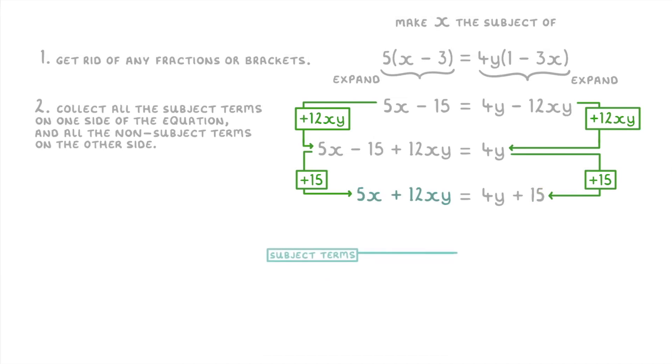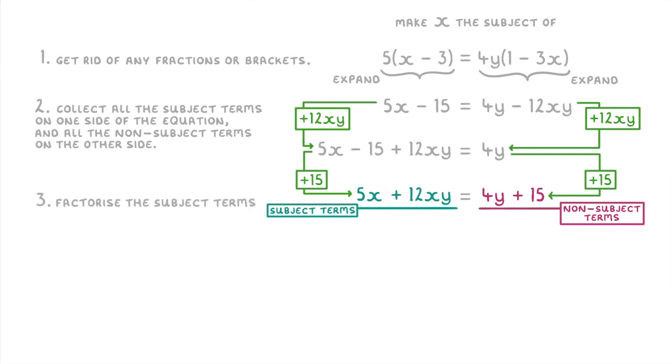Now that we have all the subject terms on one side and all the non-subject terms on the other side, we can move on to step three, which is where we factorize the subject terms to take out the subject letter. So that just means factorize these two terms to take out the common factor of x, which would be x and then in brackets 5 plus 12y, and that would still be equal to 4y plus 15.